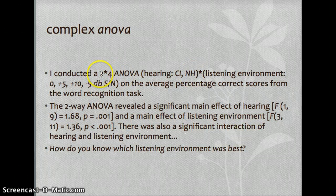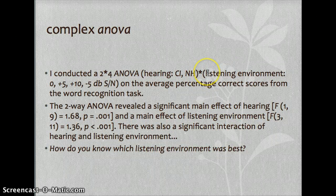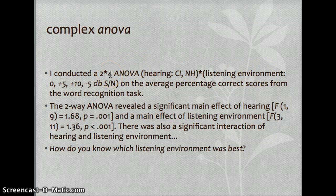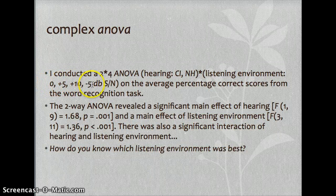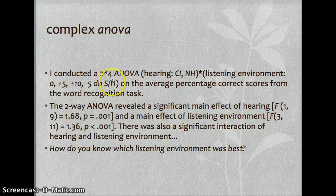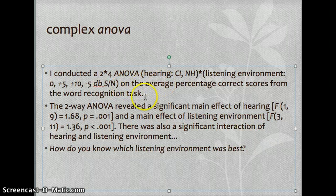One independent variable is hearing, with two levels: cochlear implant and normal hearing. The other independent variable is listening environment, and we see a 4 because there are four levels of the listening environment — 0.5, 0.10, negative 5 dB, and so on. So we're looking at a 2 by 4 ANOVA on the average percentage correct scores from a word recognition task.